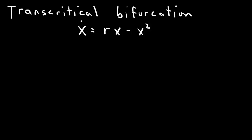Here we're going to look at the transcritical bifurcation. The normal form is x-dot equals rx minus x squared. This is a one-dimensional bifurcation in the differential equation.